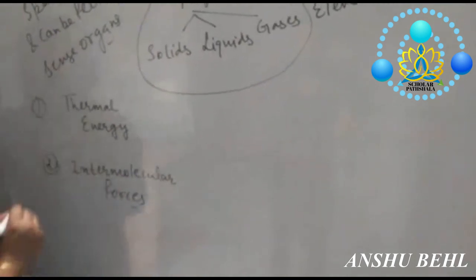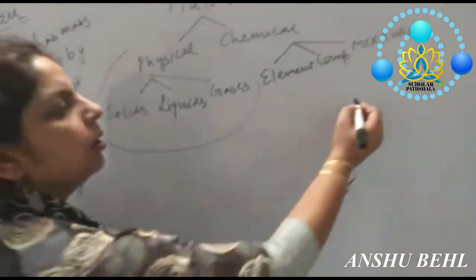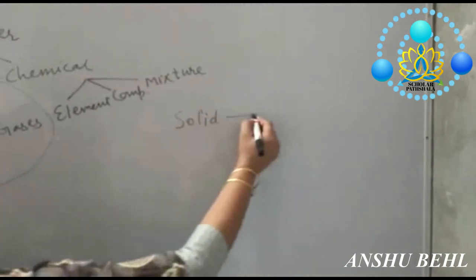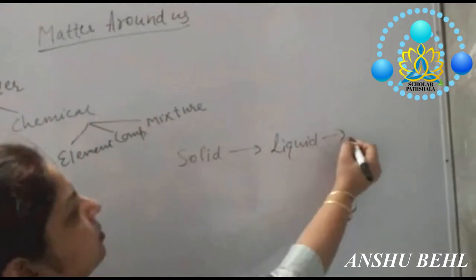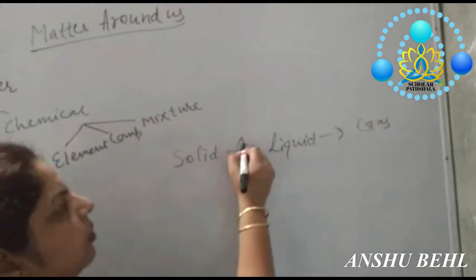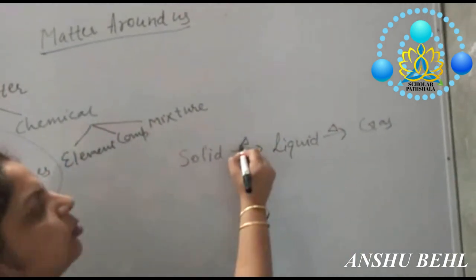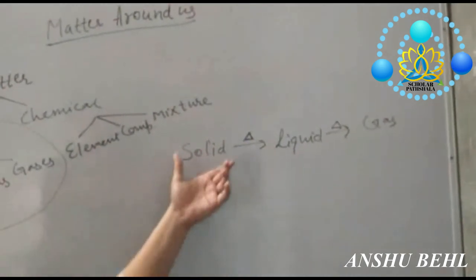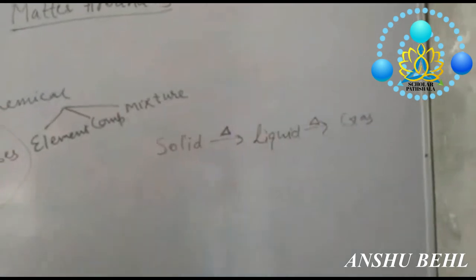As you know, if we heat a solid it turns into liquid. Solid on heating turns to liquid, and liquid on heating turns to gaseous state of matter. The triangle sign here represents heating — we are heating a solid to turn it into liquid, and liquid into gaseous state.